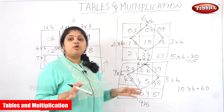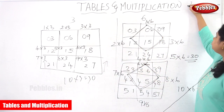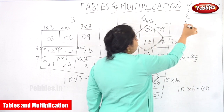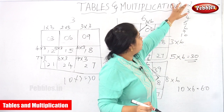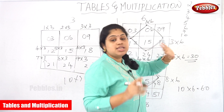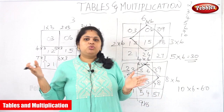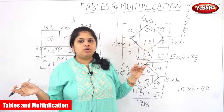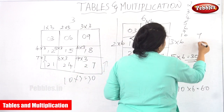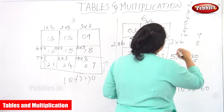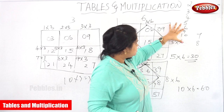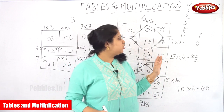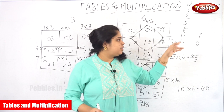Now see how many tables we have completed: 2, 3, 4, 5, 6, 9, and 10 — that is 7 tables completed. From 2 to 10, how many tables are remaining? Only 7 and 8 are left over. We are going to concentrate only on those 2 tables. We will see how the 7 and 8 tables work.